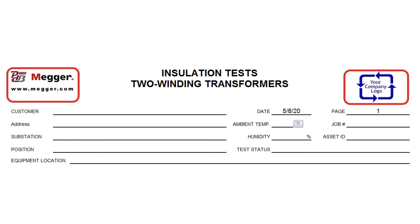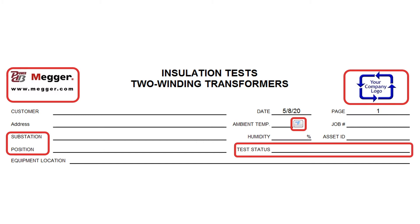You can change the logos. You can change the names of these two fields — the substation and the position — if you require something different there or for documentation purposes. The units of the temperature, Celsius or Fahrenheit, are available as a drop-down list. And at the end of the test, once you have made a final assessment of the results, you can select from a drop-down menu different options for the condition or status of that test.